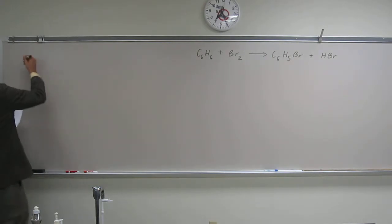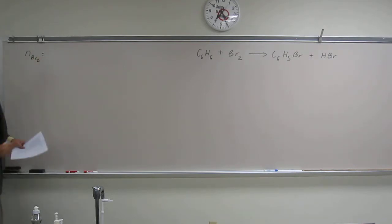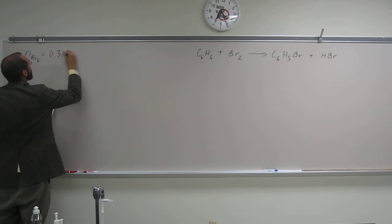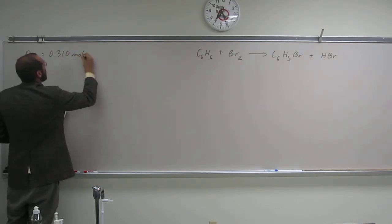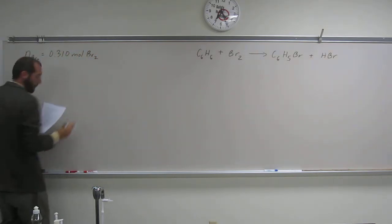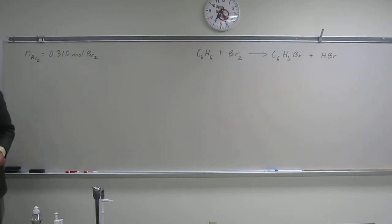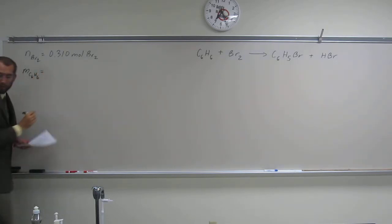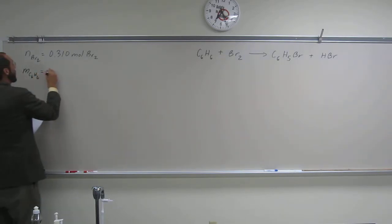So it says the number of moles of bromine is going to be 0.310 moles of Br2. And it gives us the mass of benzene, and that's 20.0 grams or so.